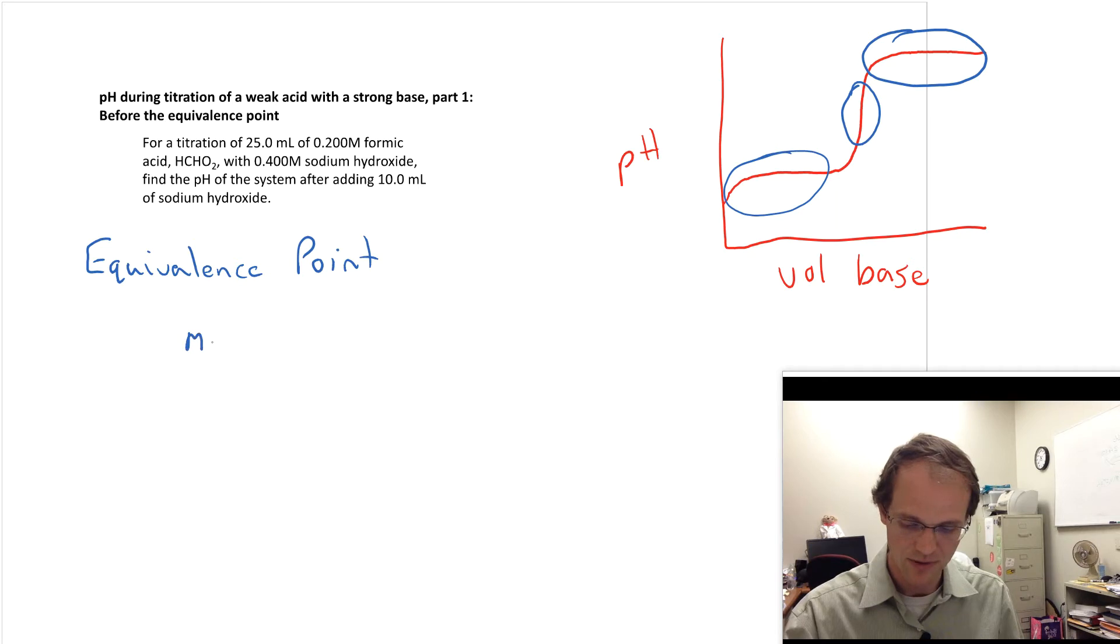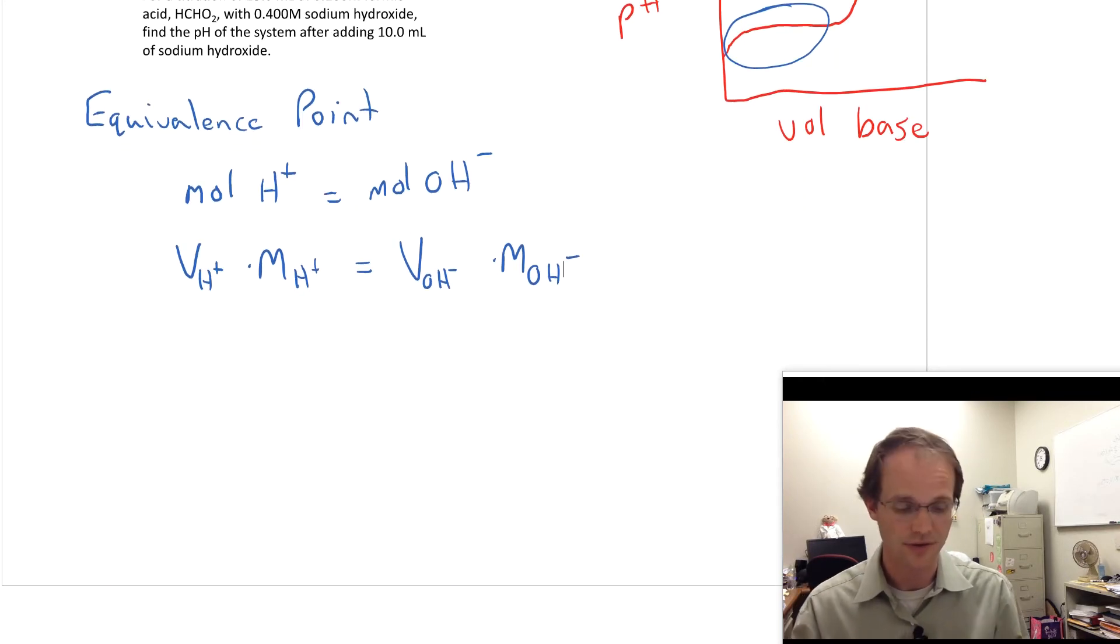So how I normally think of the equivalence point is when the moles of H+ is equal to the moles of OH-. Now how do we calculate moles in solutions? Well, moles is equal to volume times molarity, so volume of H+ times the molarity of H+ is going to be the volume of OH- times the molarity of OH-. Now that works in general for things. In this case, I have a monoprotic acid and a monobasic base. And so I can actually put that my H+ is the same thing as my acid and my OH- is the same thing as my base.